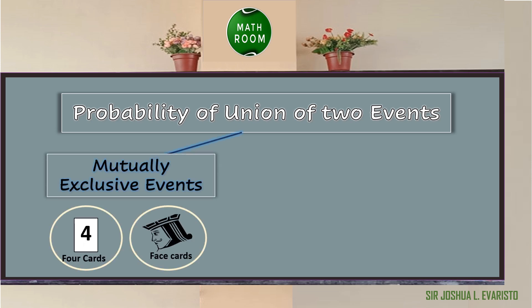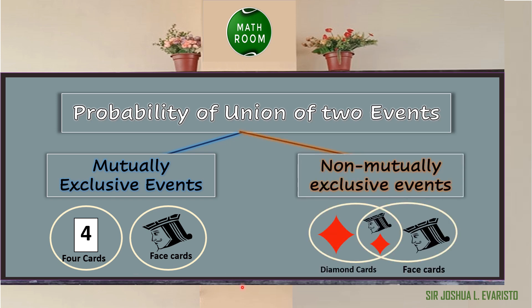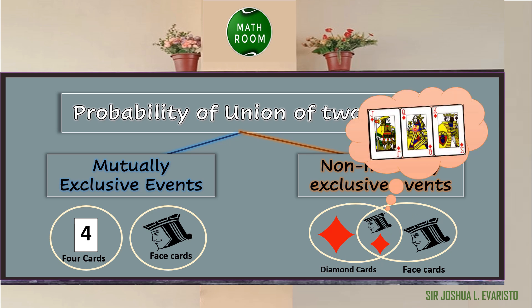In a deck of cards, getting a 4 or getting a face card are mutually exclusive events, because you cannot get a 4 at the same time as a face card in a deck of cards if you are going to select a random card. However, getting a diamond or getting a face card are non-mutually exclusive events, because you can select a diamond at the same time as a face card if you are going to select a random card. And those are the Jack of Diamonds, the Queen of Diamonds, and the King of Diamonds.